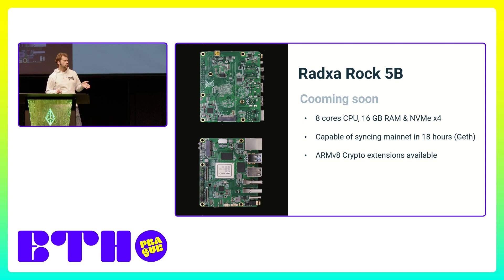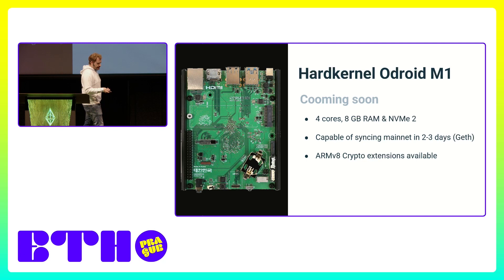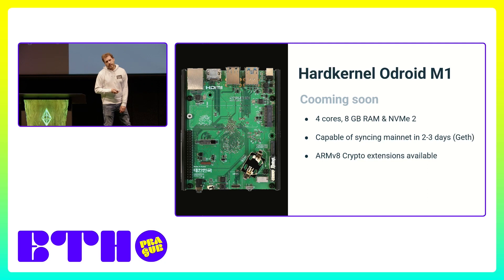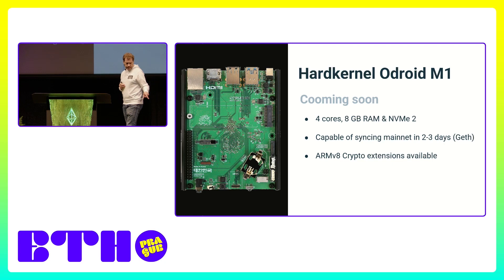We are planning to release an image for the Rock 5B in maybe two or three weeks, and everyone will be able to run it as an Ethereum node. The last device we're talking about today is the Hardkernel Odroid M1. It's more equivalent to the Raspberry Pi 4 — the CPU is less performant but it's okay — however it has NVMe support and also includes the hardware crypto extensions.